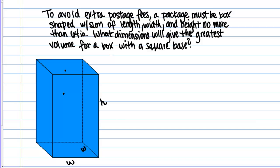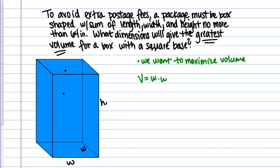The next step is to identify what you actually want to optimize, and then write a formula that describes that quantity in terms of the variables you've established. What are we actually trying to optimize? We're trying to find the dimensions that will give the greatest volume, so we want to maximize volume. We need a formula for the volume of this box. Volume is length times width times height, so here we get W times W times H, which gives us W squared H. So volume equals W squared H is what we want to maximize.